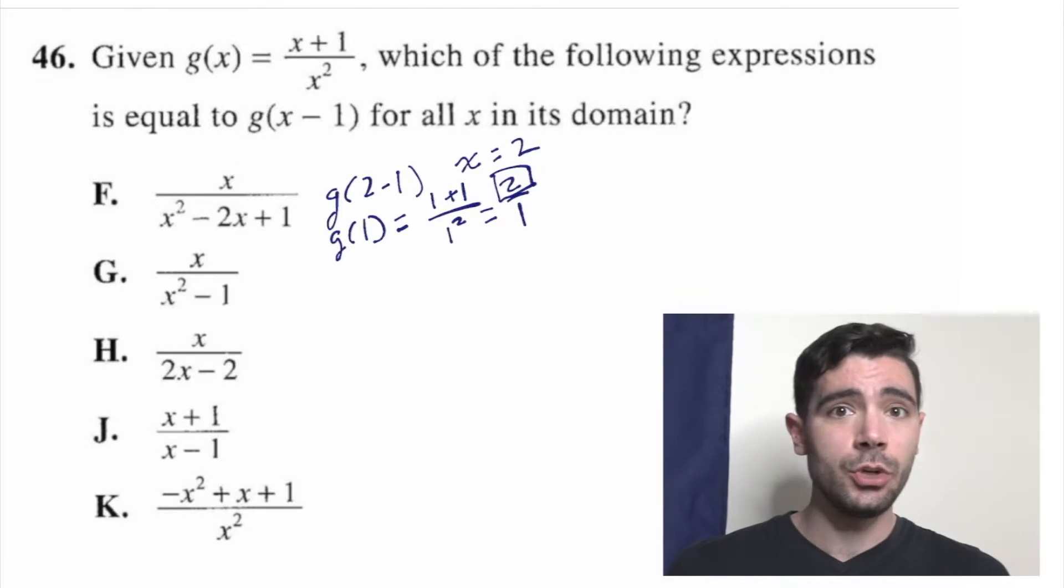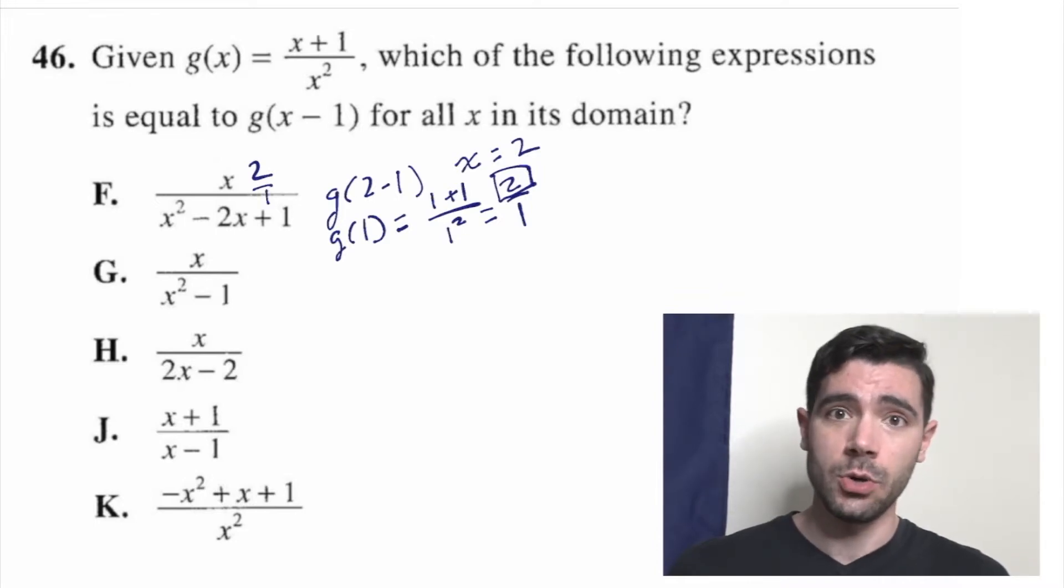Alright, we'll start with F. 2 over (2 squared, 4, minus 2 times 2, 4). So (4 minus 4) plus 1, which would give us 2 over 1, which is 2. Hmm, almost too easy. Alright, we'll keep it around.